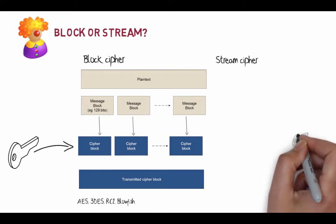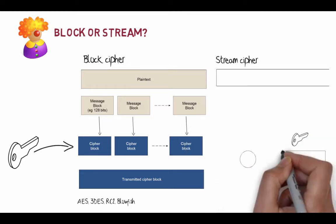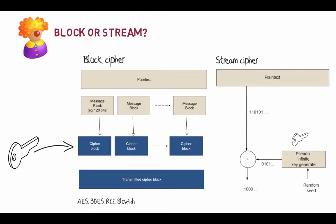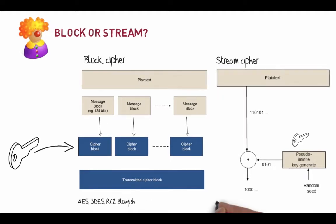A stream cipher is different — it takes one bit at a time and encrypts it. With the stream cipher we have an infinite key: some sort of random seed starts the key off and creates an infinitely long key. We take our plain text, use exclusive OR one bit at a time, and that becomes the output. Stream ciphers are often used when we don't have a great deal of processing power or need to buffer messages.